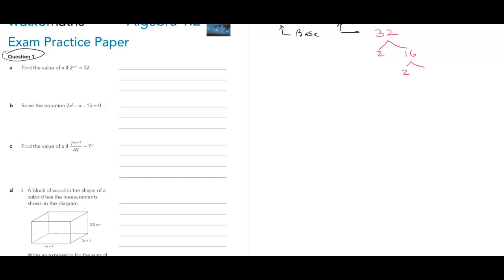So you need to write 32 in base 2. Write the factor tree. That will always help you to split the number. So 1, 2, 3, 4, 5.